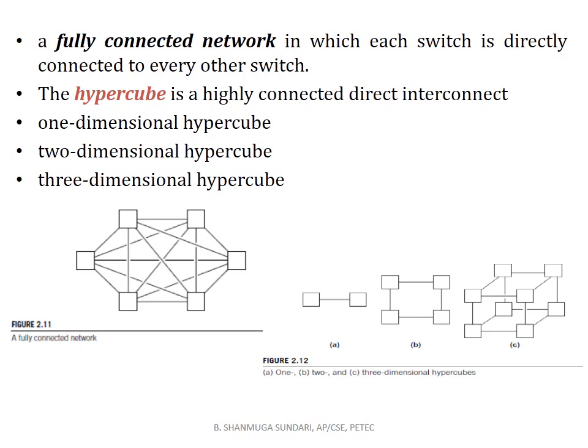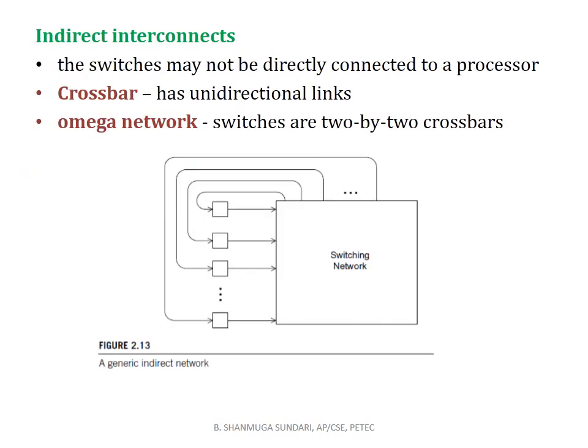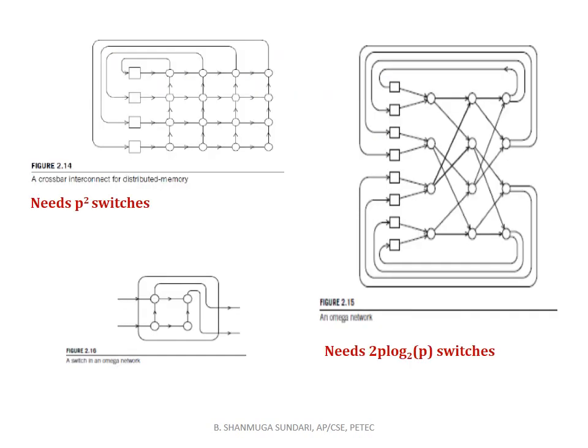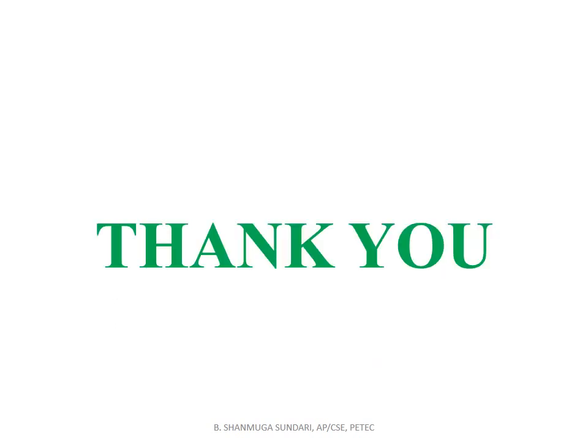A fully connected network is one in which each switch is directly connected to every other switch. A hypercube is a highly connected direct interconnect with three types: one-dimensional, two-dimensional, and three-dimensional. For indirect interconnects, the switches may not be directly connected to a processor. There are two types: crossbar and omega network. In a crossbar, links are unidirectional, whereas in an omega network the switches are 2×2 crossbars. A crossbar distributed memory interconnect needs P² switches, whereas an omega network needs 2P log base 2 of P switches.